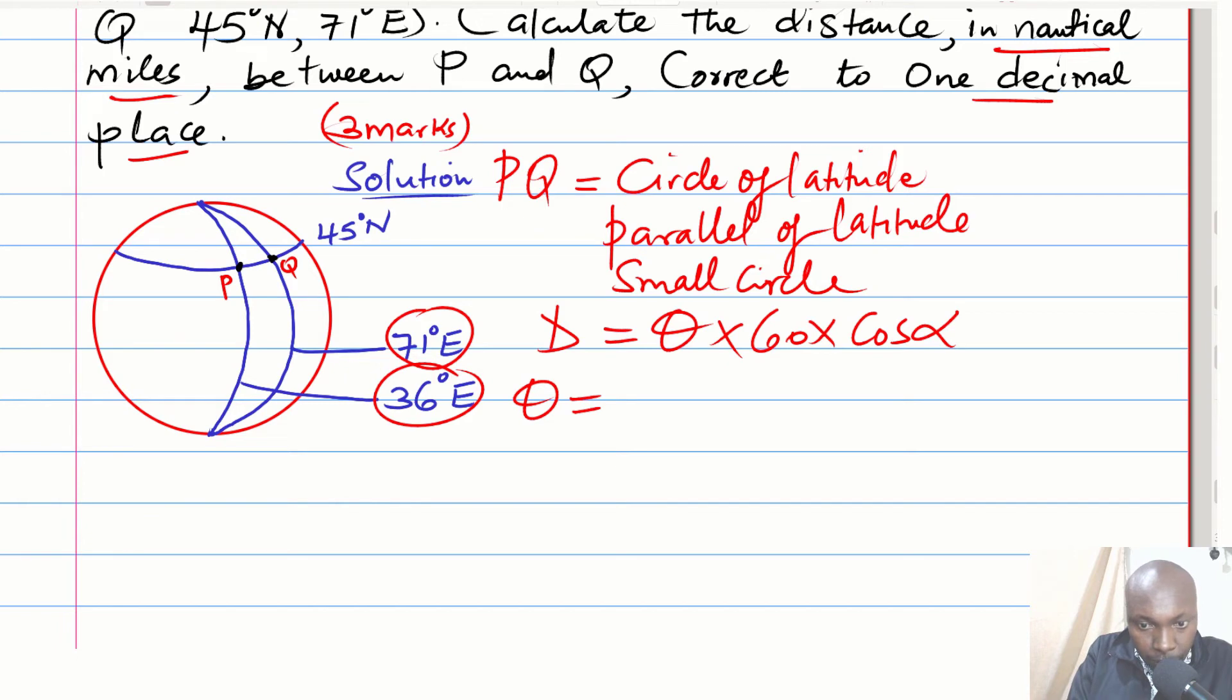The longitude difference would be 71 degrees minus 36 degrees, which is 35 degrees.